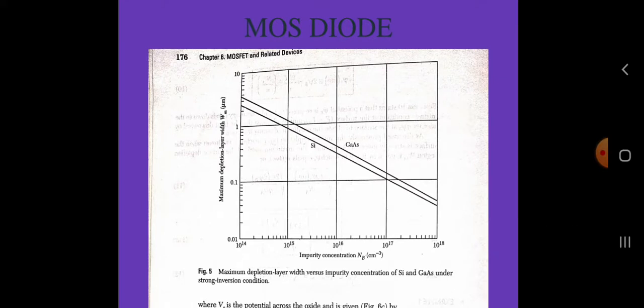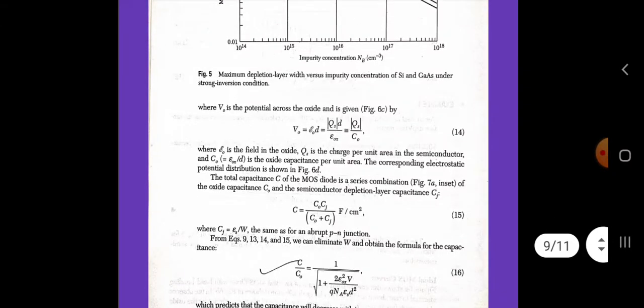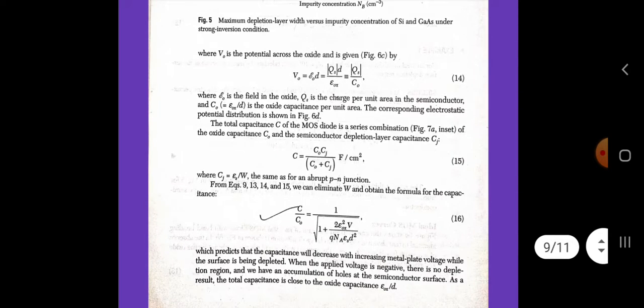The total capacitance C of the MOS diode is a series combination of the oxide capacitance C_0 and the semiconductor depletion layer capacitor Cj: C equals C_0 times Cj divided by (C_0 plus Cj) farad per centimeter square, where Cj equals epsilon_s divided by W, the same as for an abrupt p-n junction.